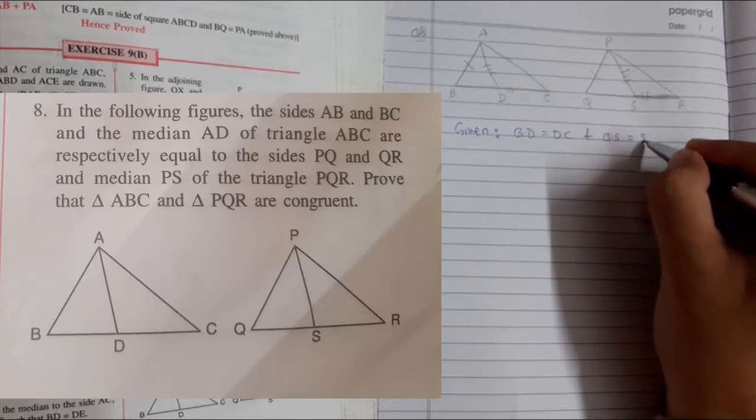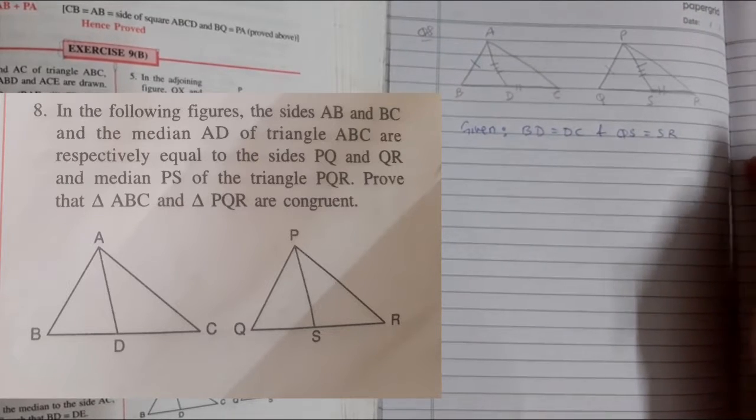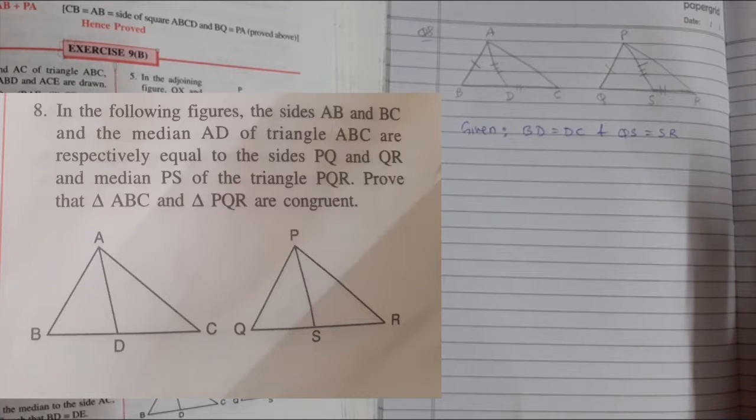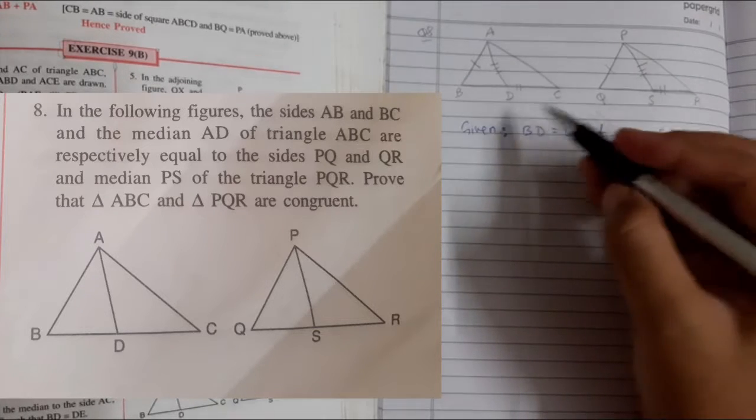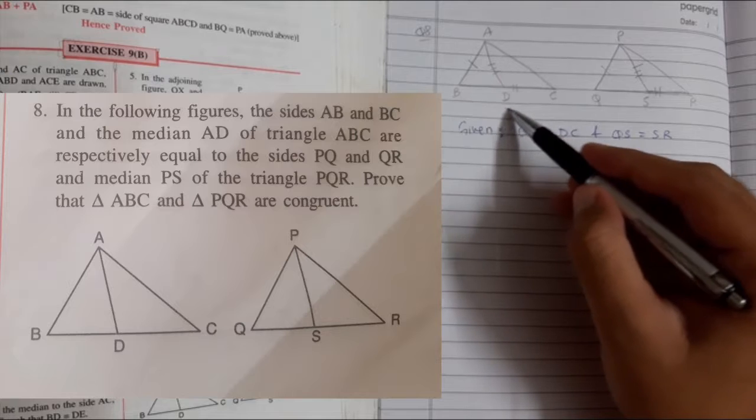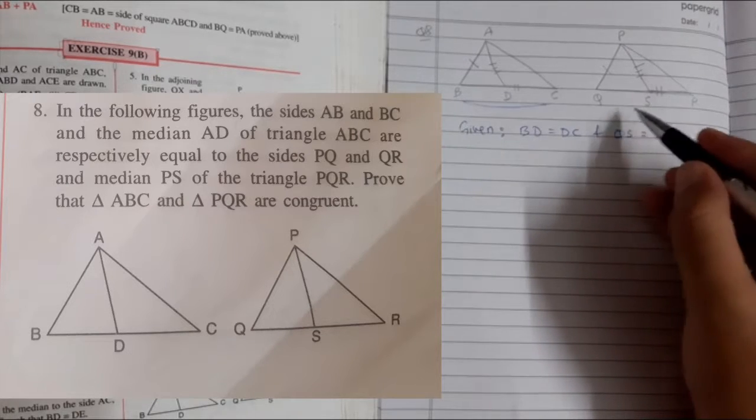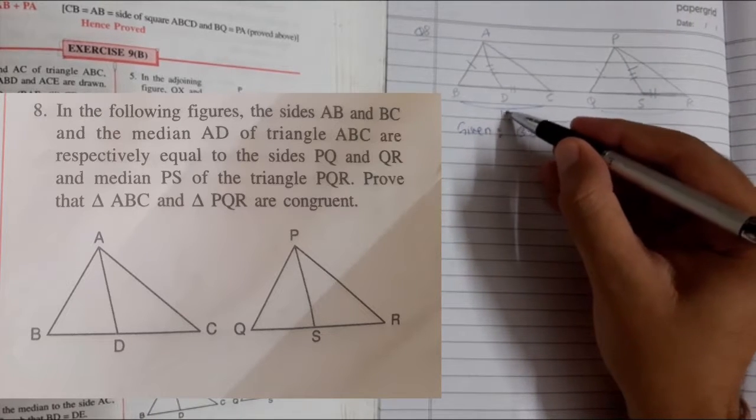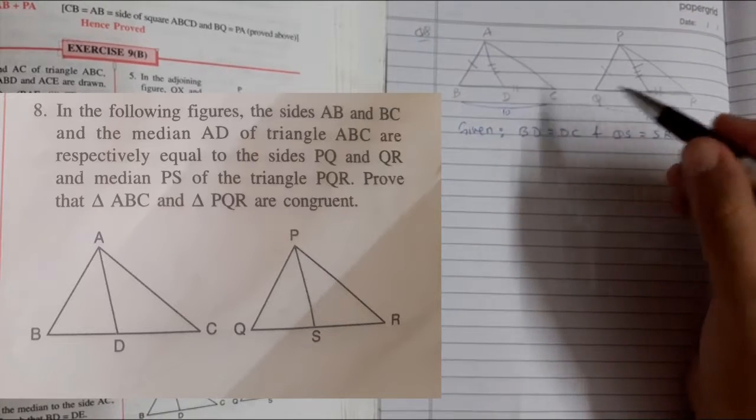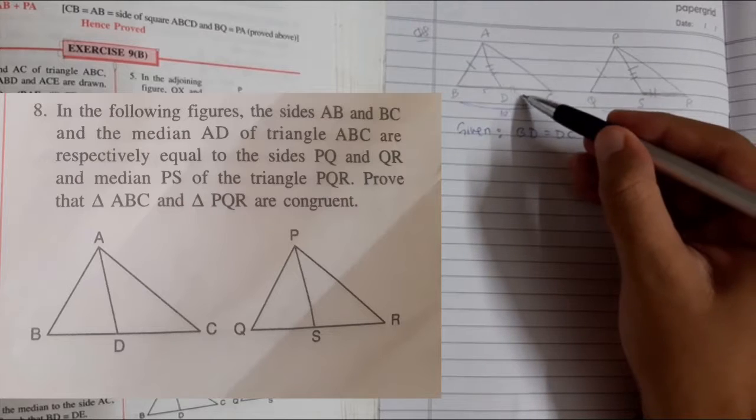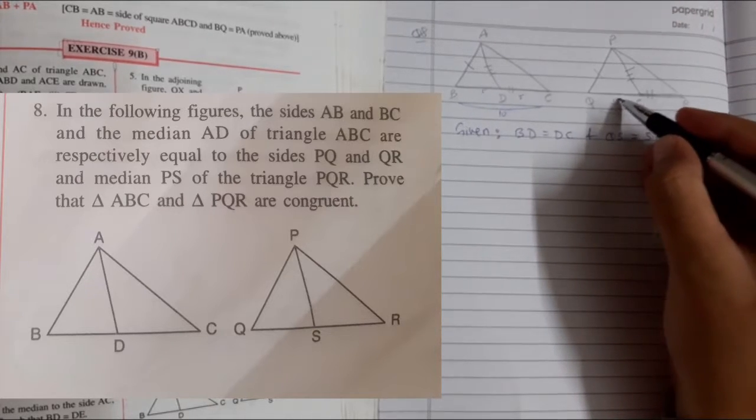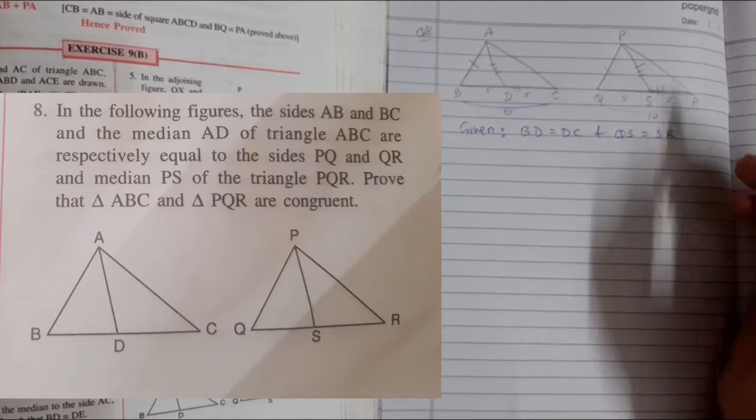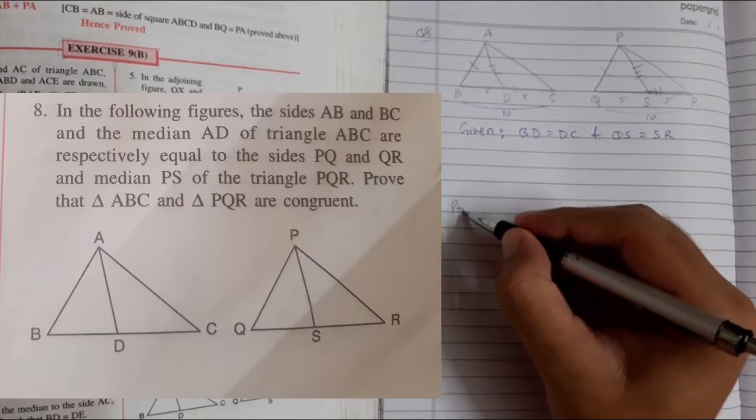And QS equals SR. Since BC equals QR, let's take them as 10. If we bisect them, each becomes 5. So BD equals QS, which we can use in the proof.